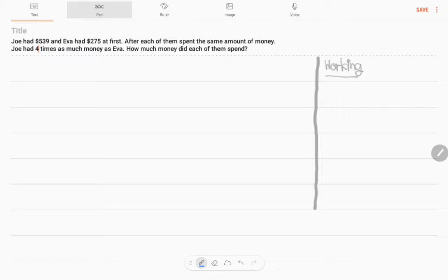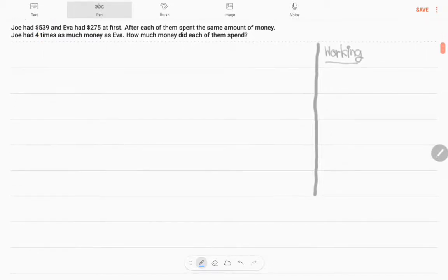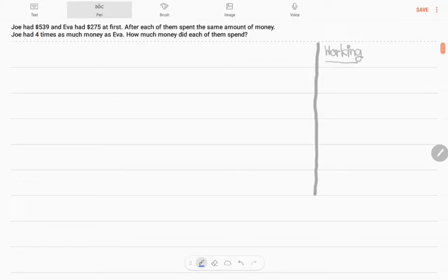Joe had $539 and Eva had $275 at first. After each of them spent the same amount of money, Joe had four times as much money as Eva. How much money did each of them spend?